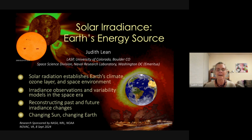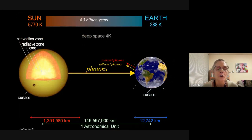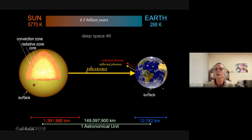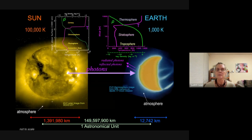I'll show you the irradiance observations from the space era. Prior to launching radiometers on satellites it wasn't possible to measure solar irradiance variability because of the atmosphere interfering with the view of the sun. We have 40 years of space measurements. I'll also show how, with my colleague Ying Wang, we reconstruct past changes of the sun and make predictions for the future.